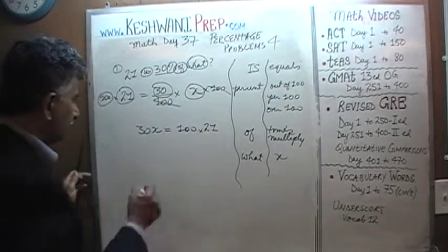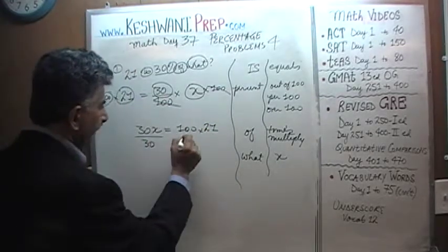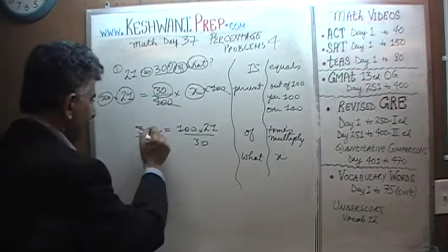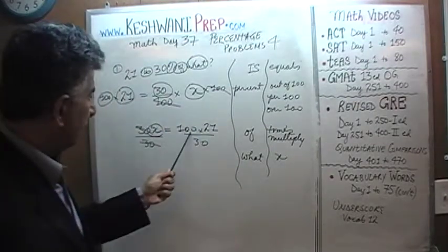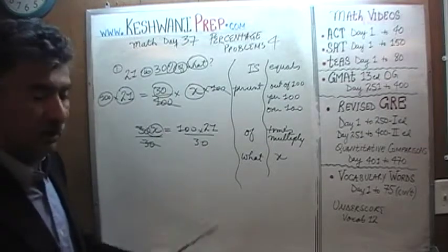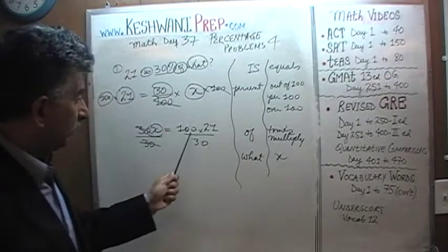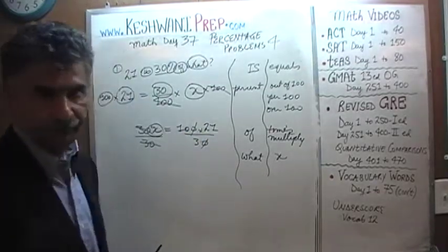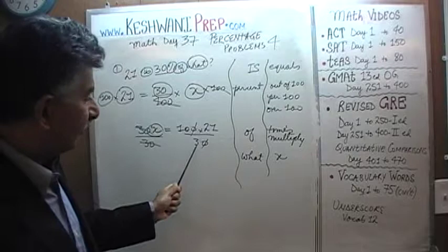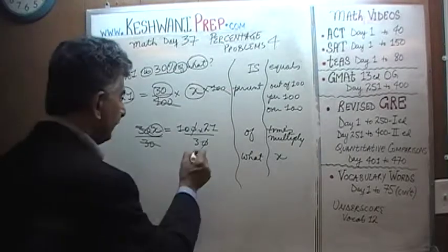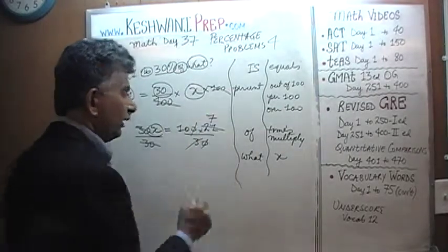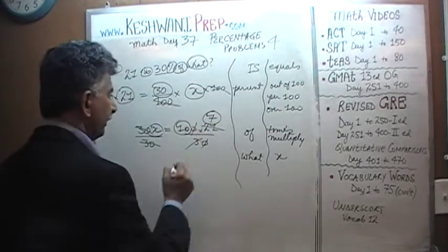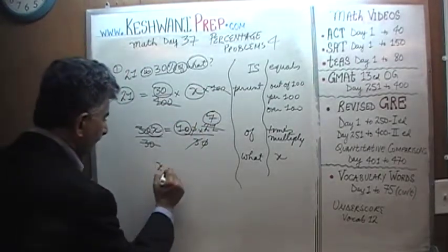Leave it alone — don't do anything with it yet. Let's divide both sides by 30. The 30 drops out and we are left with x by itself. We have 100 on the top and 30 on the bottom. Divide top and bottom by 10: 100 becomes 10 and 30 becomes 3. We see 21 on the top and 3 on the bottom. Divide top and bottom by 3 — 21 has seven 3s. So x is 7 times 10, which is 70.